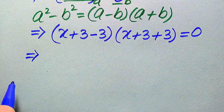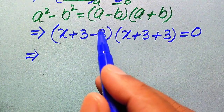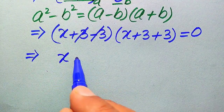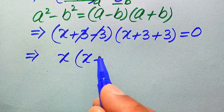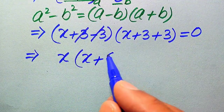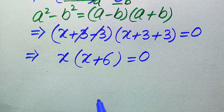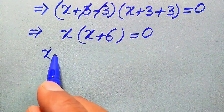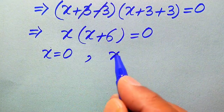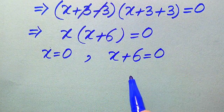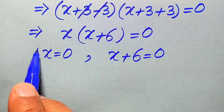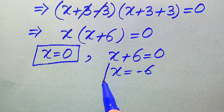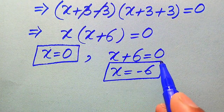In the next step, the negative and positive 3 terms cancel out and we get x(x + 6) = 0. Now we divide this into two cases: the first case is x = 0, and the second case is x + 6 = 0, which gives x = −6. So these are the two roots of the given equation from the first method.